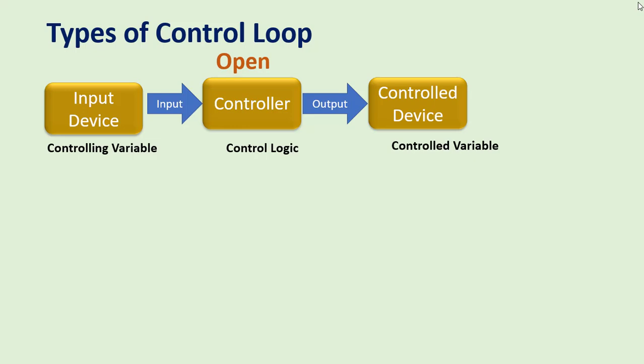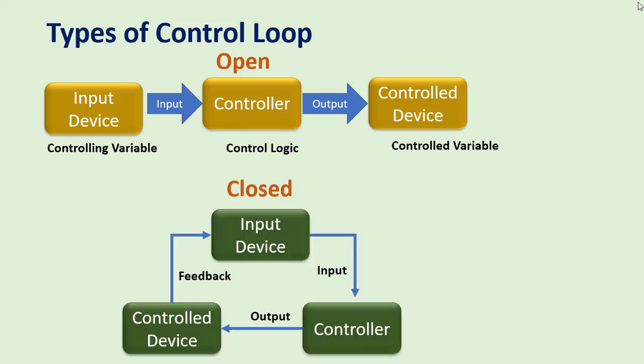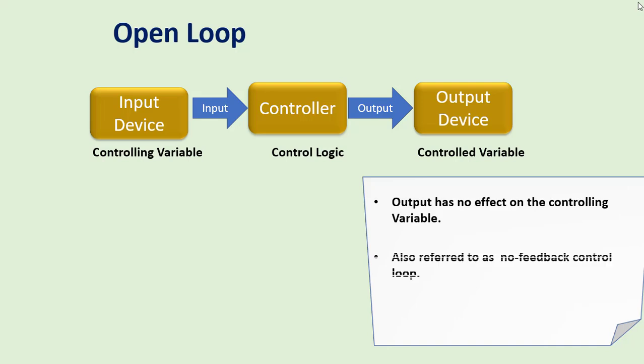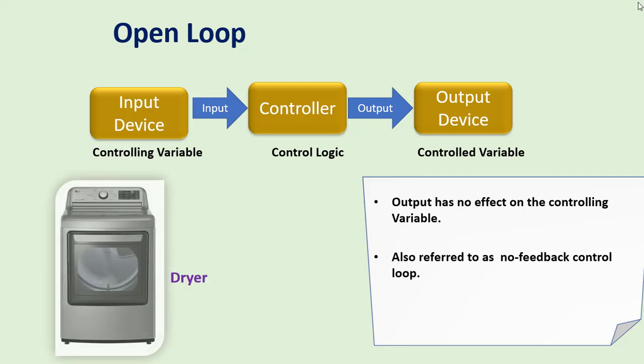There are two types of control loops: open control loop and closed control loop. In an open control loop, the output has no effect on the controlling variable — this is also referred to as a no-feedback control loop. A simple electric laundry dryer is an example of an open control loop.